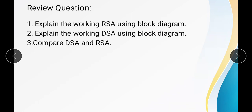These are some review questions. I hope all students will be able to answer them after learning this lecture properly. The first question is: explain the working of RSA with a block diagram. Second: explain the working of DSA using a block diagram. Third: compare DSA and RSA. To summarize: digital signature is a technique in which the sender uses its own private key to encrypt and send the message, and the receiver uses the public key to decrypt the message — private key for encryption, public key for decryption. Thank you so much, I hope you are enjoying the lectures.